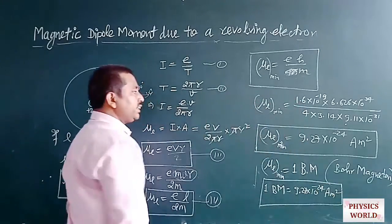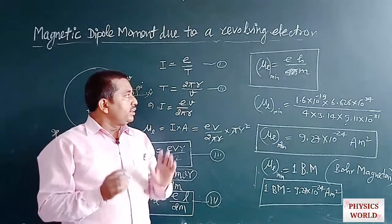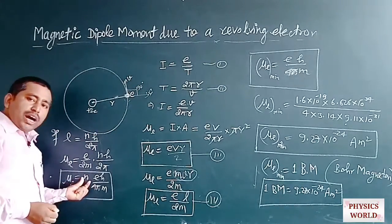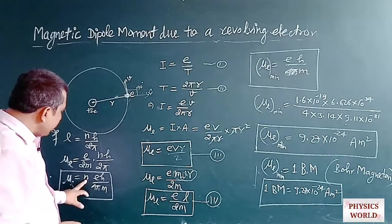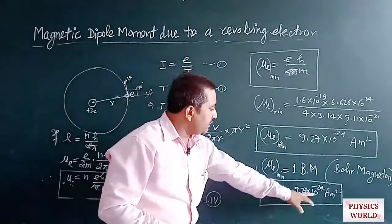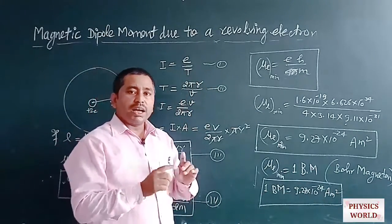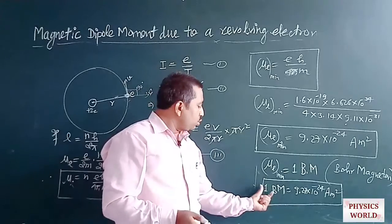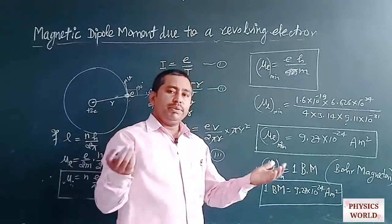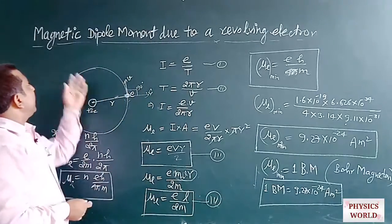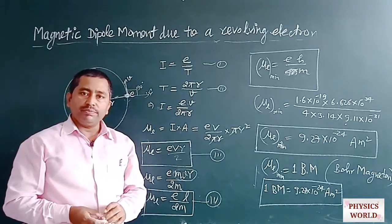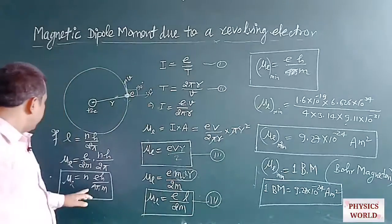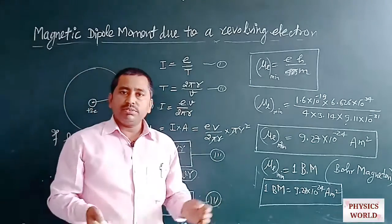Similarly, for the second orbit electron (n = 2), the magnetic dipole moment is 2 Bm, and for the third orbit it is 3 Bm. This is all about the magnetic dipole moment possessed by a revolving electron. You can solve different types of numerical problems based on these formulas. Thank you.